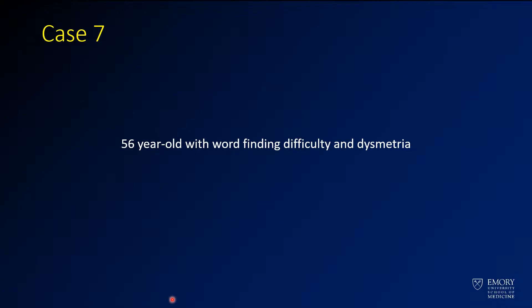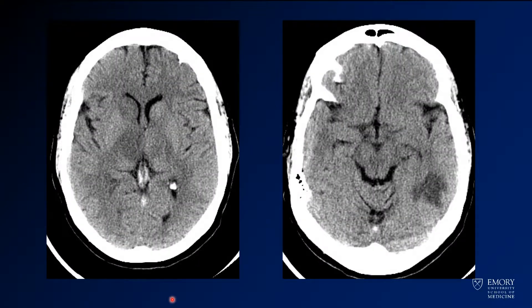The last case we'll go through here is a 56-year-old with word-finding difficulty and dysmetria. Here you have a couple of images from a head CT, with this area of hypodensity here.